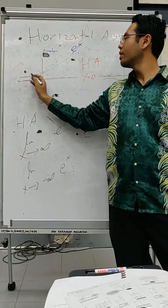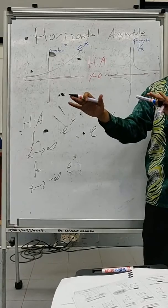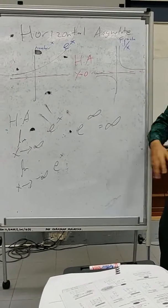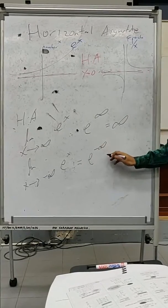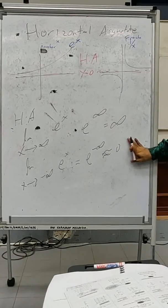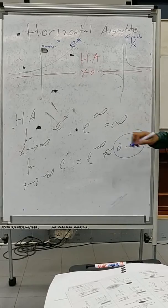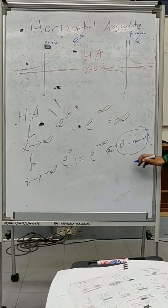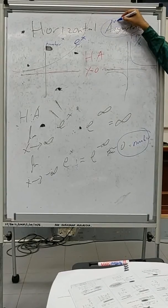When X approaches negative infinity, it's different — it gets very very near to y equals zero. That's what an asymptote is: getting very very near but not really reaching there — like a friend-zone situation. So e to the power of negative infinity is just near to zero, very near to zero. The asymptote is not infinity.